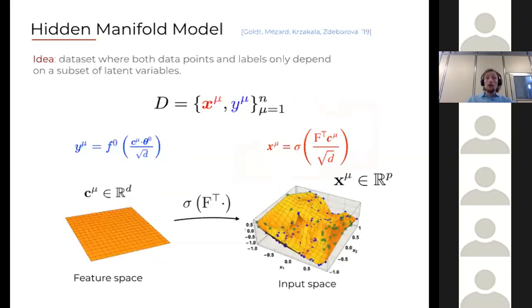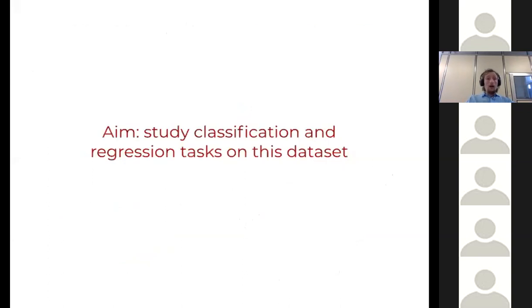That's the idea that Sebastian previously introduced for the hidden manifold model. Here we take a data set x and y where x is generated from a linear combination of latent vectors, and we take the labels just to depend on the latent representation. So y depends on c that lives in the low dimensional latent feature space. My x, which is the data given to the statistician, is going to be hidden by a projection into a higher dimension space followed by a non-linearity so the problem is not linear and is non-trivial. The scale is such that when I take the high dimensional limit of the latent dimension, input dimension, and number of samples to infinity while keeping the ratio fixed, everything scales nicely.